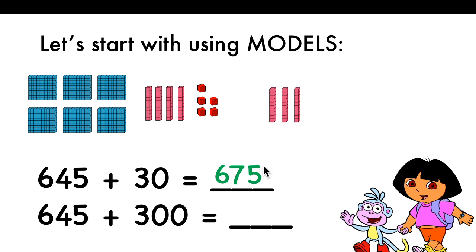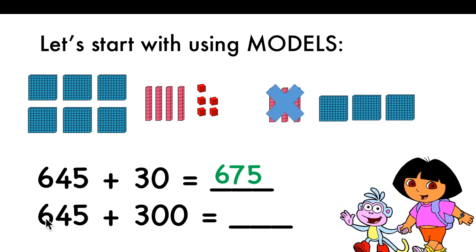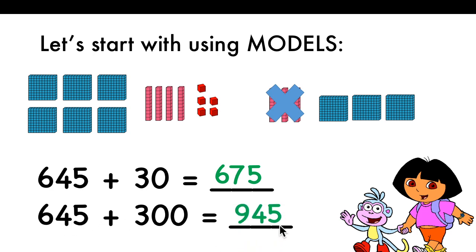When you're adding hundreds, you add the hundreds digits. Here, 645 plus 300. You're adding 600 plus 300. How much is 6 plus 3? It will be 9. So 900 will be the hundreds and 45 will stay. It will be 945.